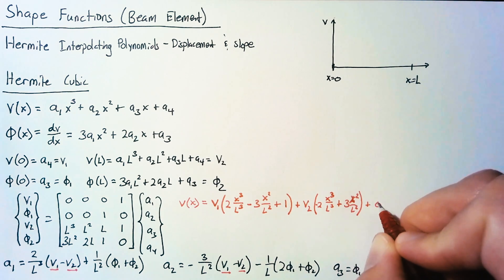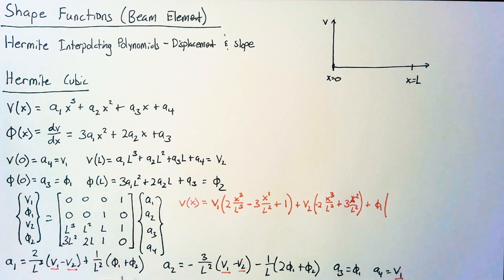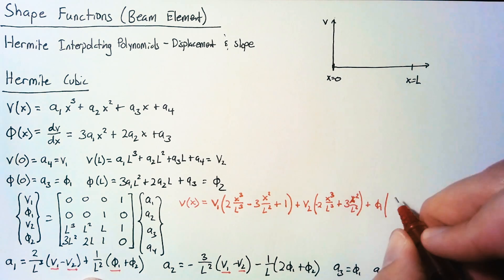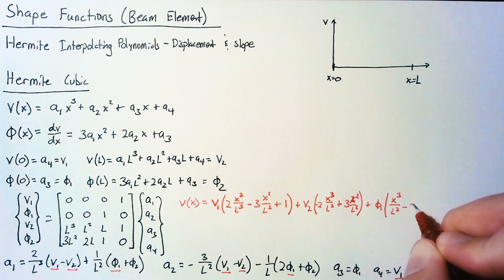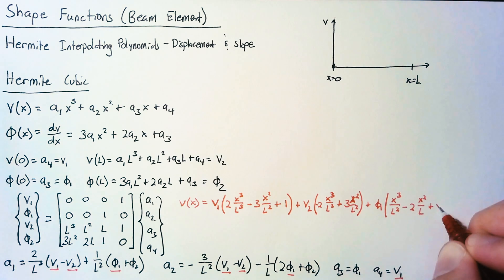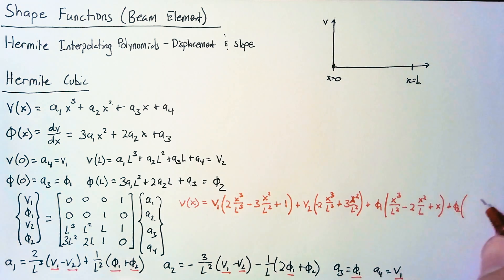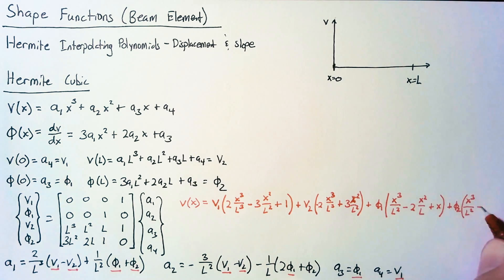Then for phi1, we have 1x cubed over l squared minus 2x squared over l plus x. And then finally for phi2, we just have our x cubed over l squared minus x squared over l.